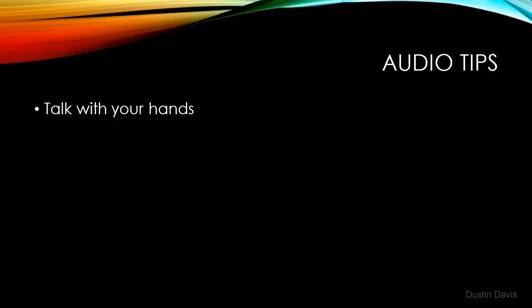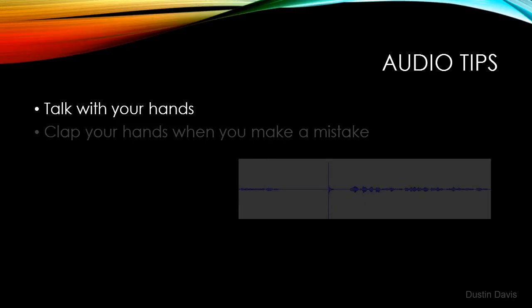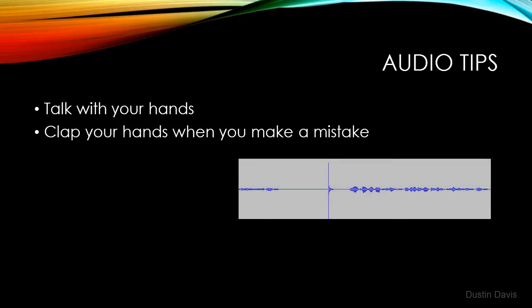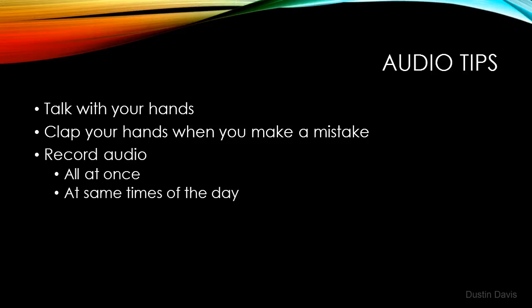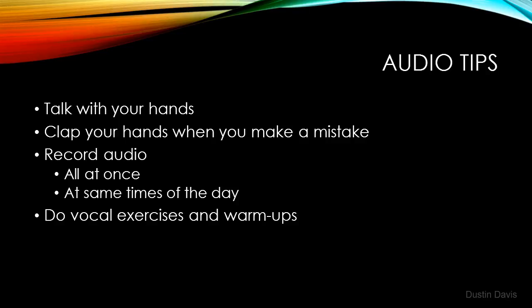Three tips I have for recording audio: first, talk with your hands just like you would as if you were talking to someone in person — this gives a more natural sound to your speech, especially if you're reading from a script. Second, if you make a mistake like stumbling over a word or choking, clap your hands and then try the sentence or word again. When you clap, the audio will have a spike which is visible from the recording software — you can quickly see where the mistakes are and then edit them out. It saves a lot of time. Third, record all at once if possible. If you record right after lunch and again at midnight, the two tracks aren't going to sound the same — your voice will sound normal after lunch but tired at midnight, making for inconsistent audio. If you can't record all at once, try to record around the same time each day. You might try vocal exercises — they really do help in getting consistency in your voice.